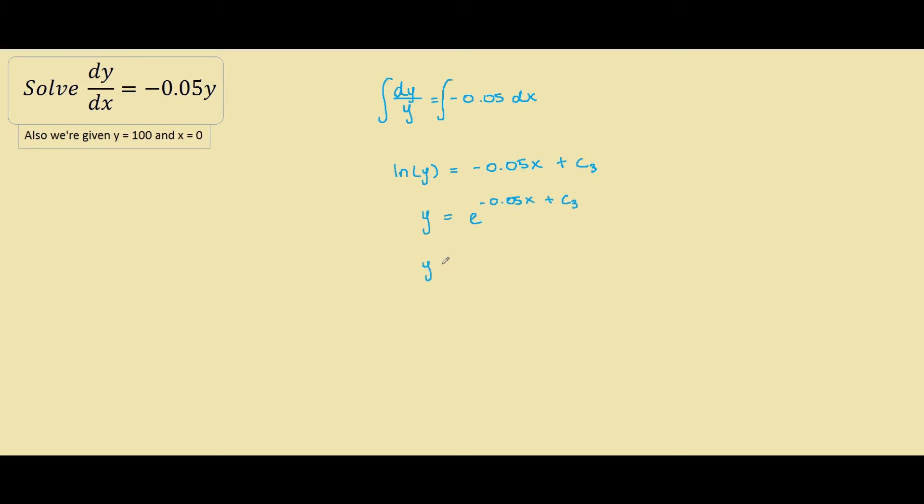We also know that this is the same as e to the negative 0.05x times e to c3, just from our index laws. If we look at this term, do you guys agree that this is just a constant because e raised to a number is also just a number so we can call this whole section a. So we're left with a e to the negative 0.05x.